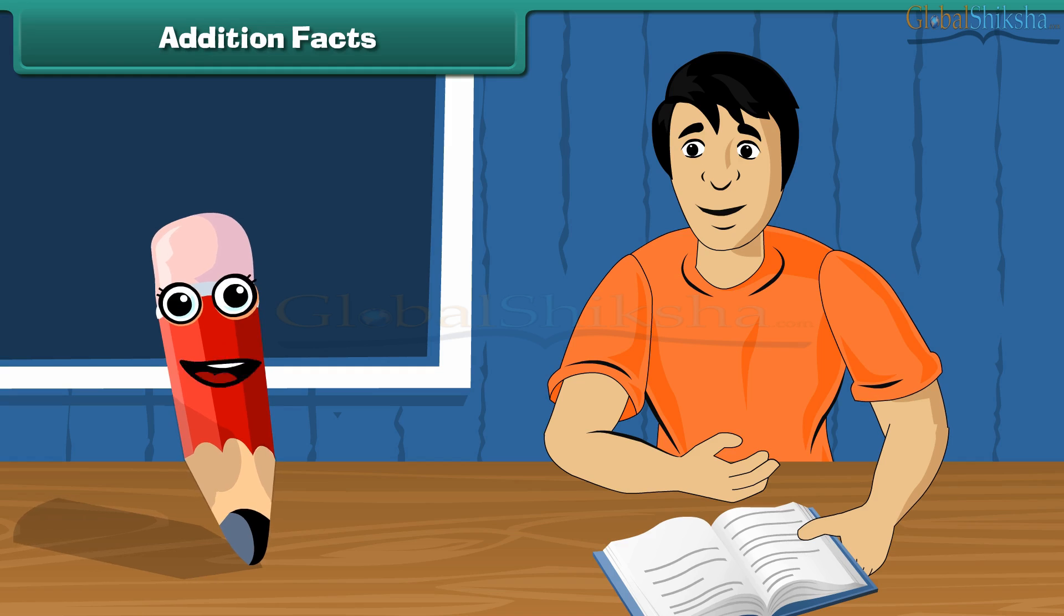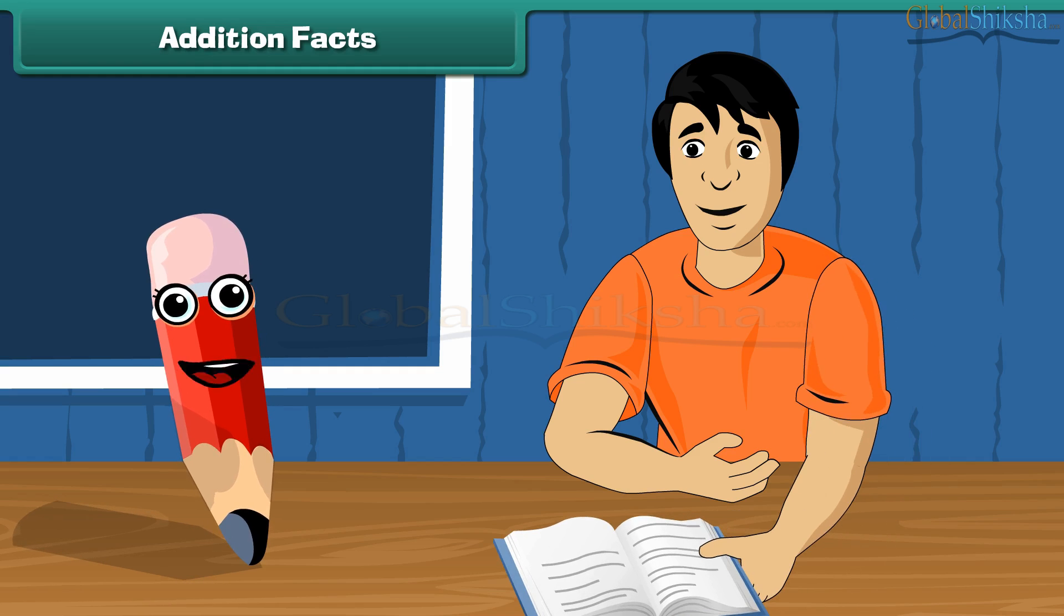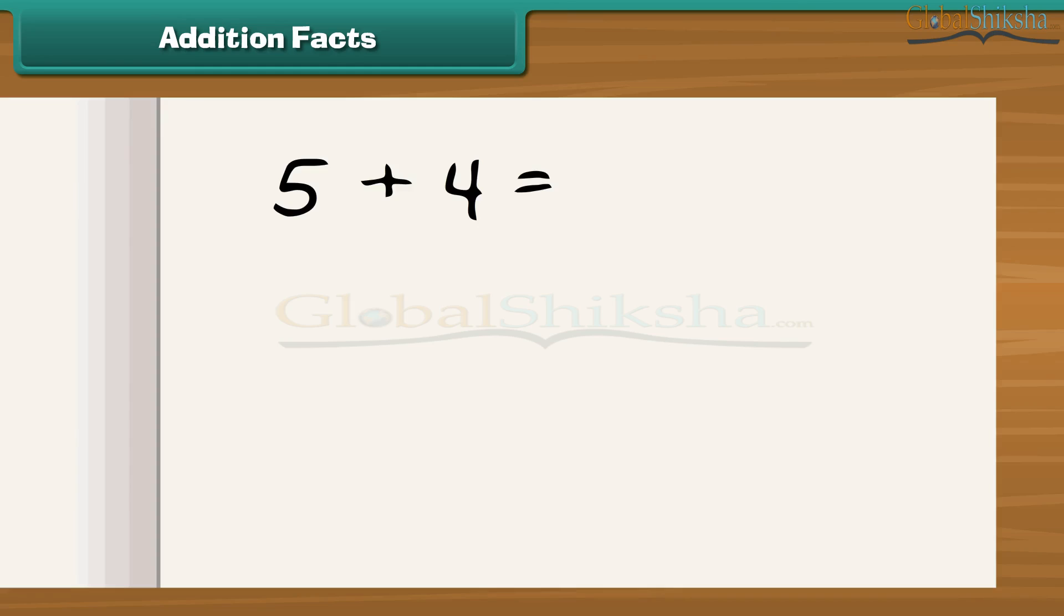Show me your notebook. You know that the sum of 5 and 4 is 9, and if we add 4 to 5, we again get a sum of 9. Whether you add 5 to 4 or 4 to 5, their sum will always be the same. This is known as addition fact.